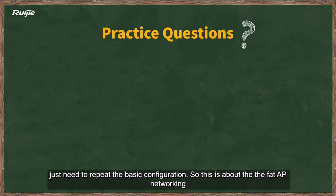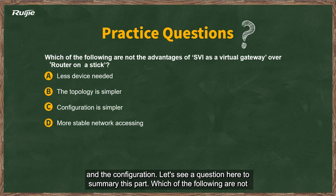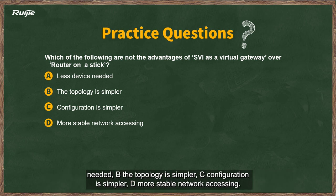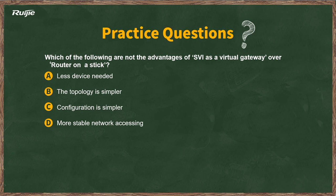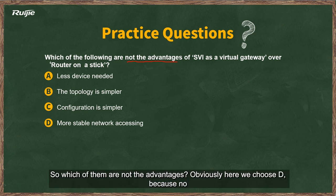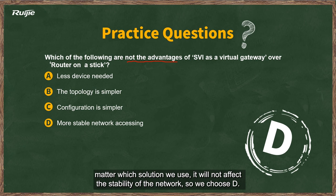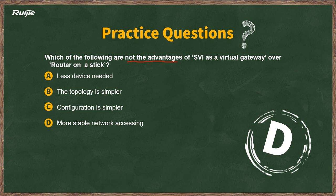To summarize, here is a review question: Which of the following is NOT an advantage of SVI as a virtual gateway over Router-on-Stick? A: Less devices needed. B: Simpler topology. C: Simpler configuration. D: More stable network access. The answer is D — because neither solution affects network stability, so D is not an advantage of SVI over Router-on-Stick.